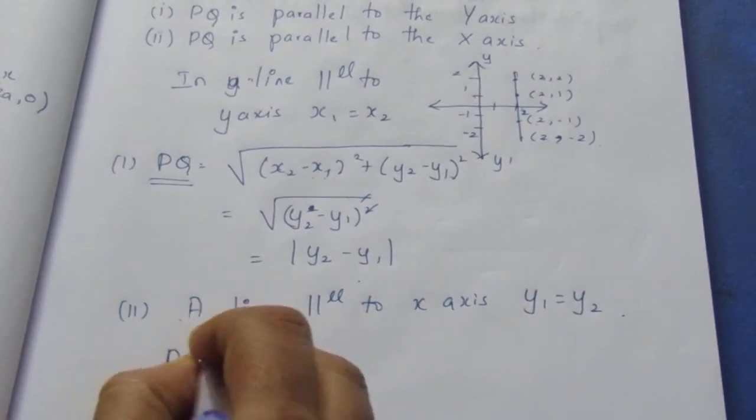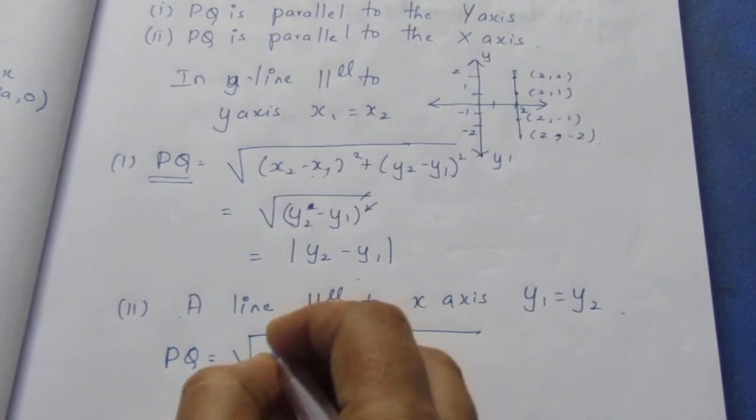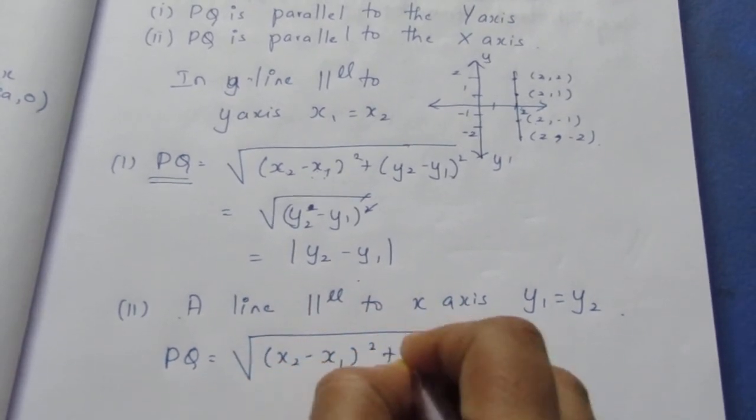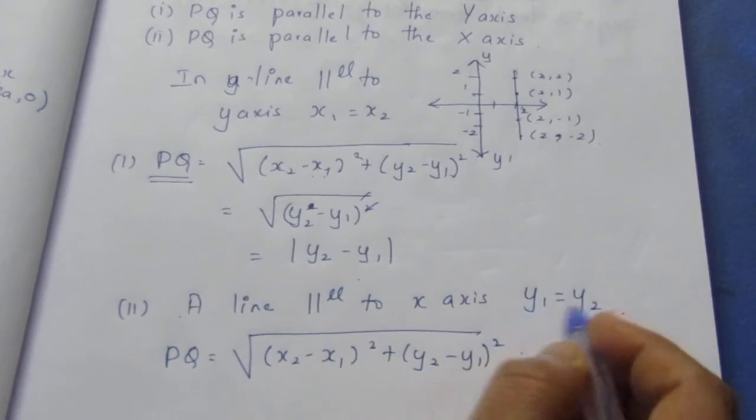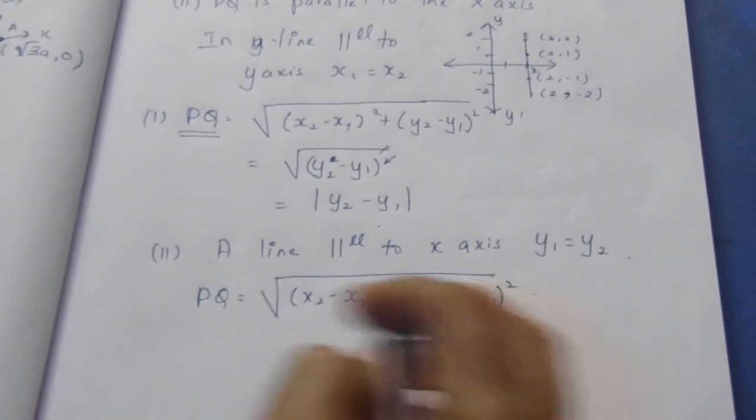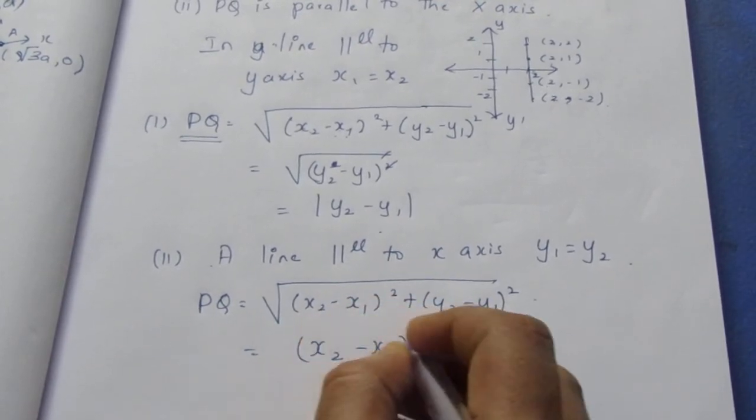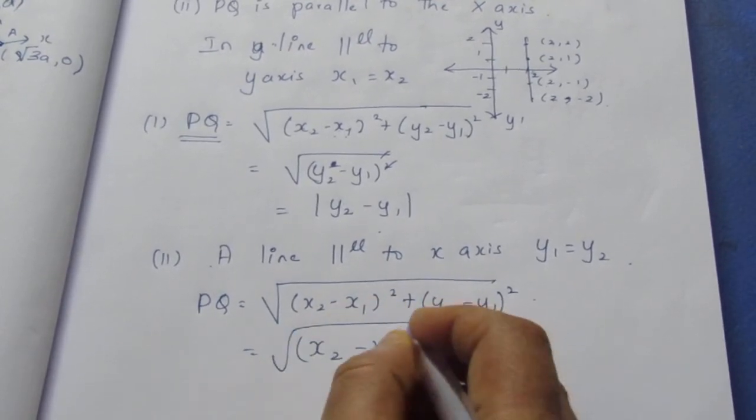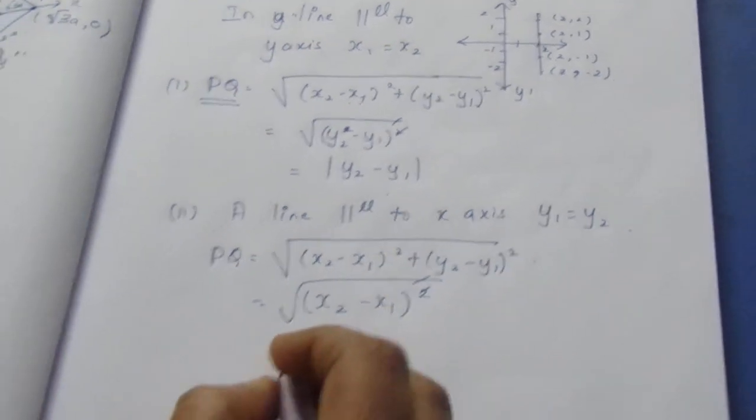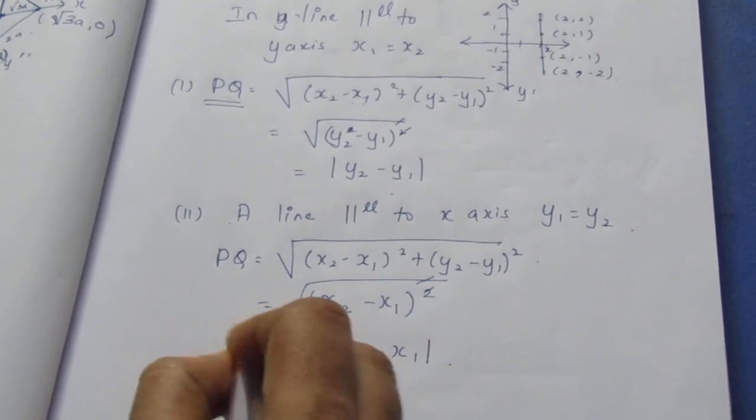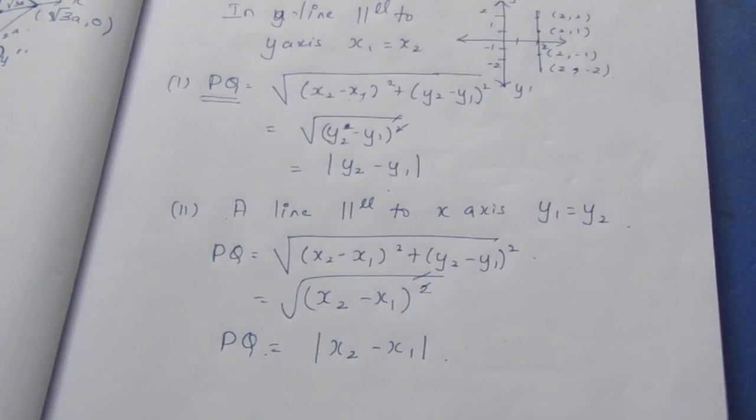So PQ will be equal to, you know the formula, it is √[(x2 - x1)² + (y2 - y1)²]. We know that these two are equal so this becomes 0. So we can directly say this is √[(x2 - x1)²]. Root and square get cancelled. Now this you can write in mod |x2 - x1|. So distance of PQ when it is parallel to X axis is |x2 - x1|. That's all with the sum. Thank you.